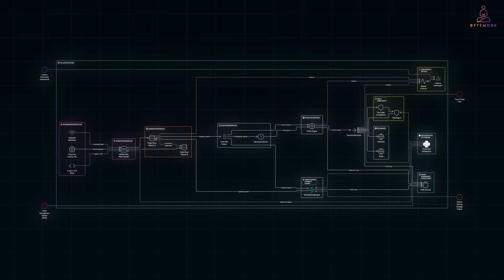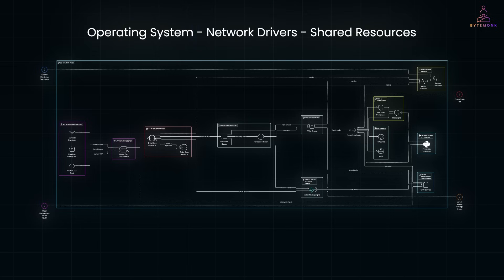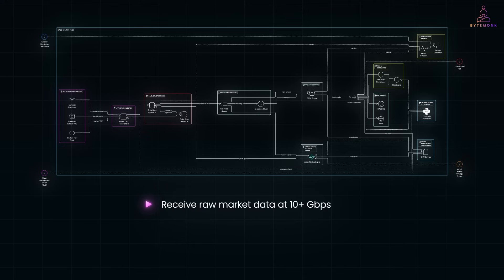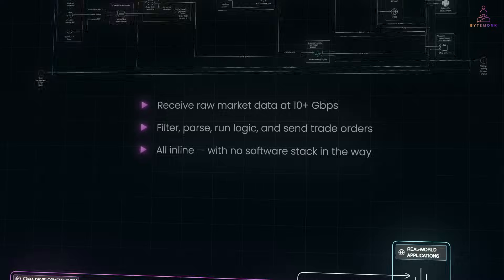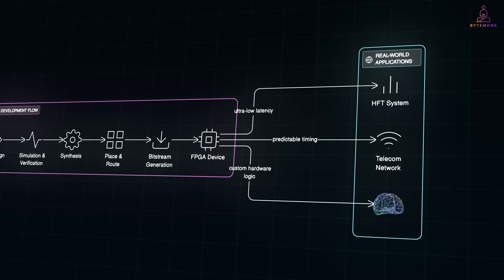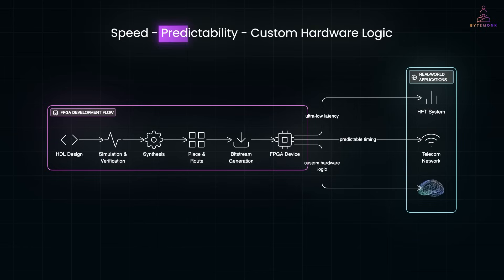Unlike software running on a CPU, an FPGA can process data directly in hardware without waiting on the operating system, network drivers or shared resources. It can receive raw market data at 10+ Gbps, then filter, parse, run logic and send trade orders — all in-line with no software stack in the way. From HFT to telecom to AI at the edge, FPGAs are already powering real-world systems where speed, predictability and custom hardware logic matter most.